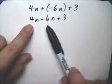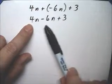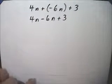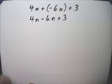The 4n and the negative 6n, those are like terms. Like terms are terms that are so similar that they can be added together.